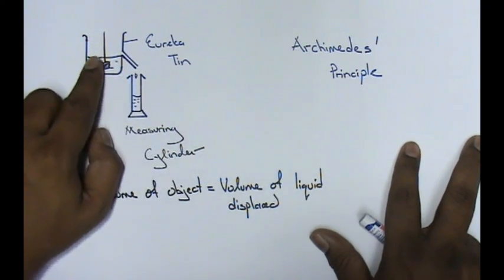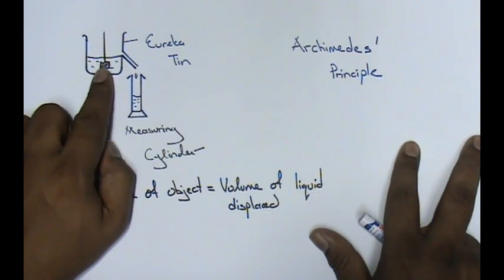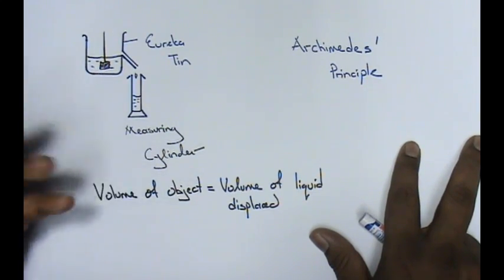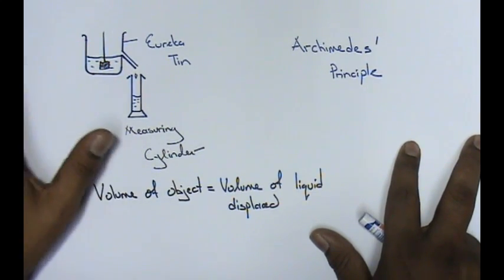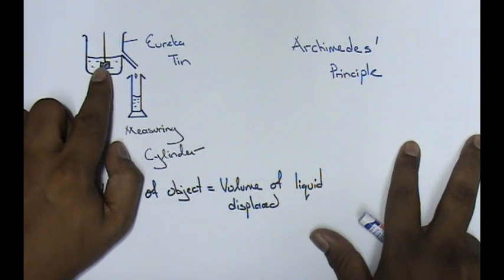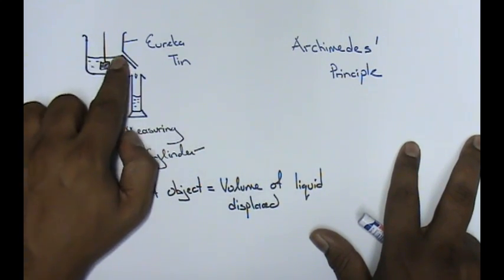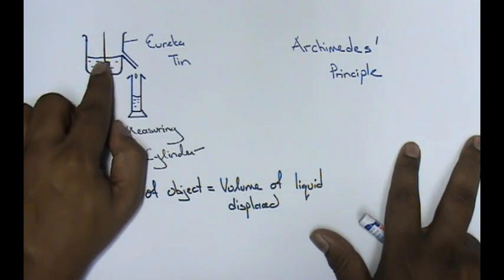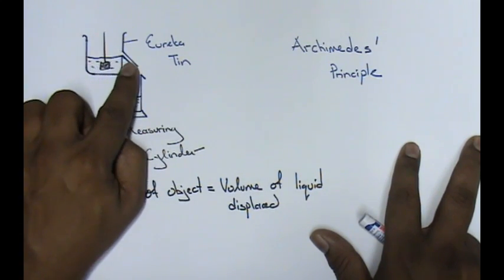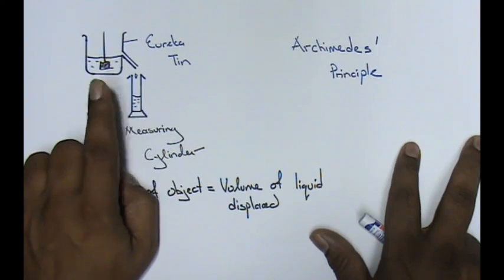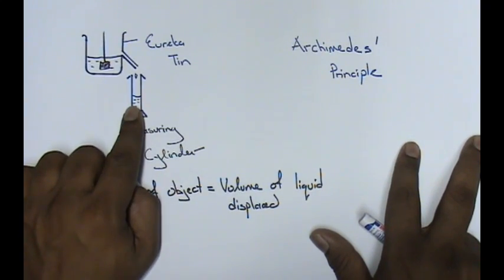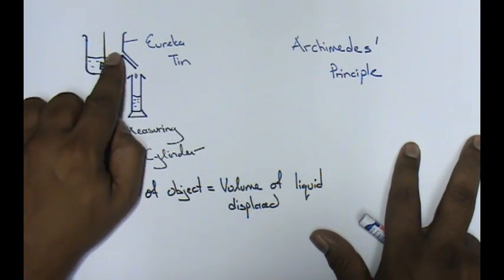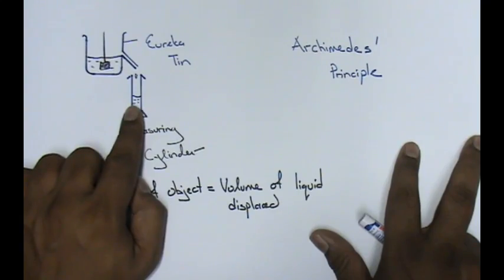The moment you put an object inside your Eureka tin - in this case it looks like a cube, so let's leave it as a cube - the water displaced enters into the measuring cylinder.